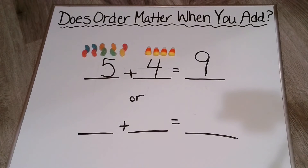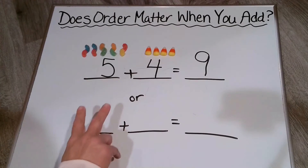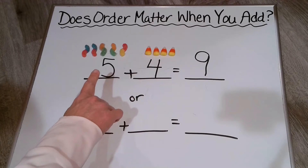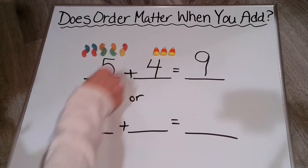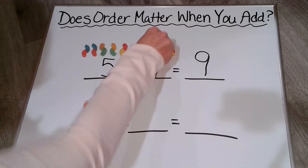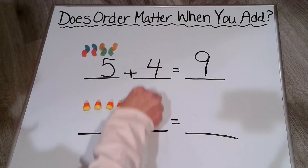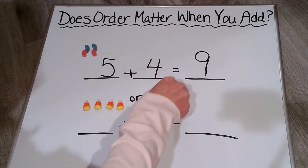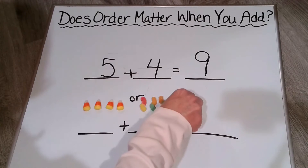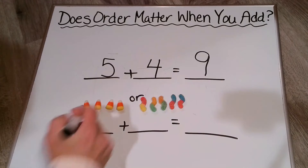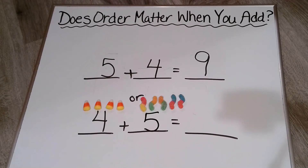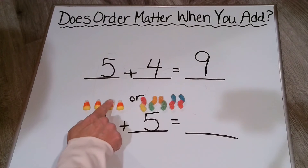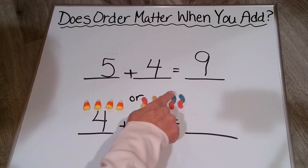Now, this is where it's going to get a little tricky, because what I want to do now is flip-flop — I want to switch up my addends. I want to put 4 first. So let's bring down our candies, and they are going to help us again with our counting. So we know 4 is now going first and then we are going to have our 5.